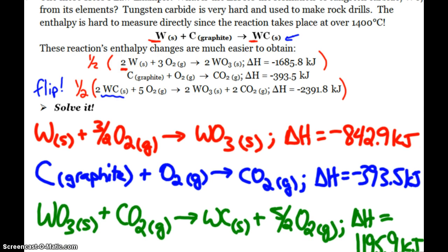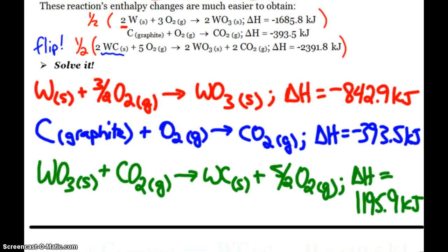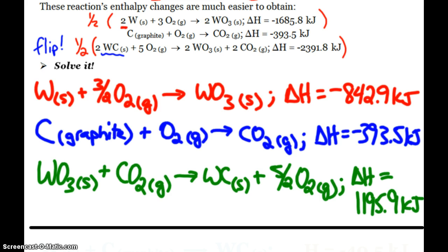I also need to make sure that I flip this reaction, because I need tungsten carbide to be a product. So when I do that, these are the reactions I end up with. First reaction cut in half, so my delta H is cut in half. Second reaction, I left it totally alone.